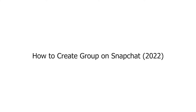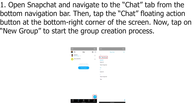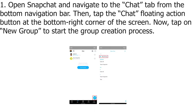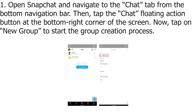How to Create Group on Snapchat 2022. Step 1: Open Snapchat and navigate to the Chat tab from the bottom navigation bar. Then, tap the Chat Floating Action button at the bottom right corner of the screen. Now, tap on New Group to start the group creation process.